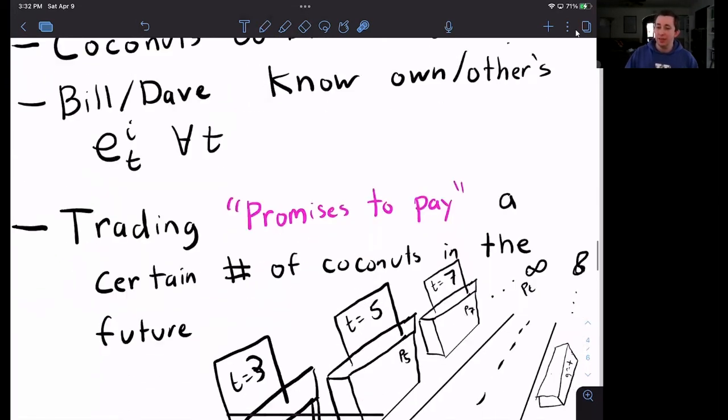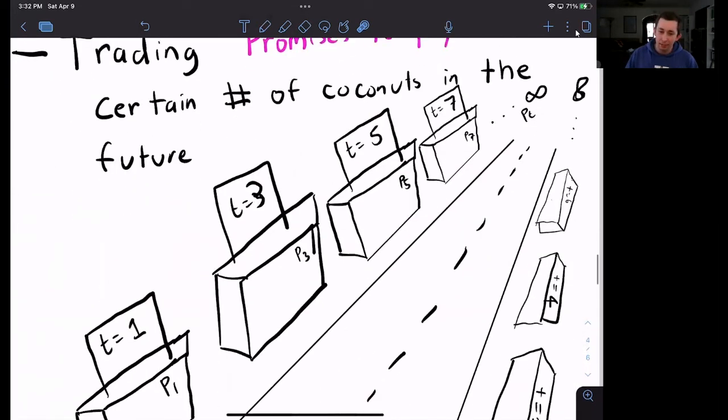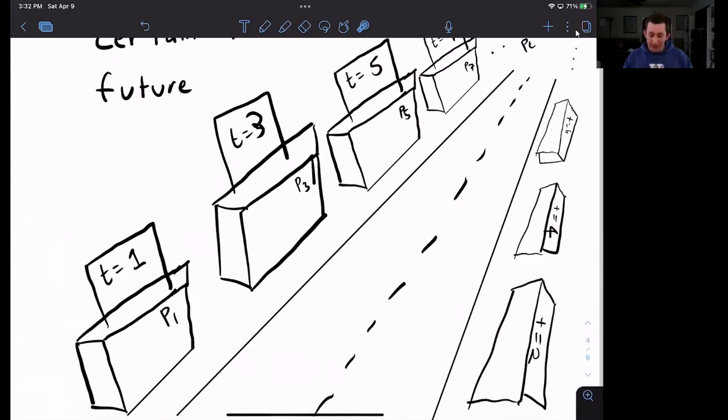You can think of it as if before time starts, we have this market. Each market is a time period. So this is the market for period one, this is the market for three, five, seven, all the way to infinity. And each stall for each time period has a price. So P1, P3, P5, P7, and here's all the even periods.